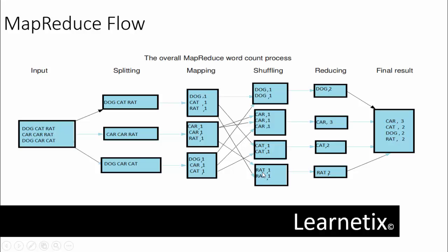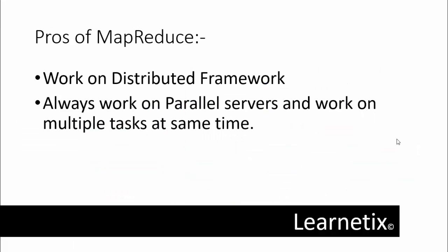After that, the reduce function will start. In this procedure, they will start to count it. Dog comes two times, so dog comma two. All the things will be reduced accordingly. After that, they will compress and give the detailed value into the final result: car comes three times, cat comes two times, dog comes two times, and rat comes two times. This is the workflow of map and reduce function.